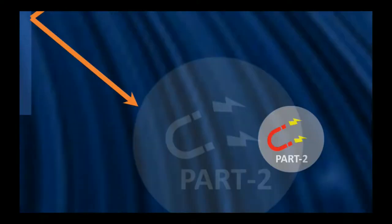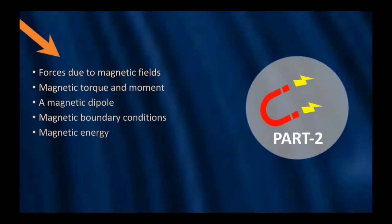Coming to Part 2, we'll be speaking about magnetic forces. The things that we'll be dealing with are forces due to different magnetic fields, what is magnetic torque and its momentum, the concept of the magnetic dipole, then the boundary conditions of magnetism. In the last section, unit 2, if you remember, we discussed boundary conditions with respect to electric field intensity and electric flux density in electrostatics. Here we'll be speaking in terms of magnetostatics, and at last, magnetic energy. This is what we have to cover in unit 3.